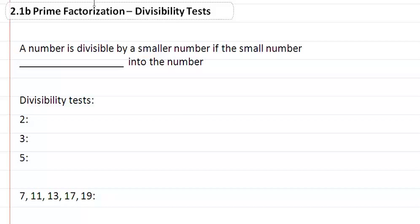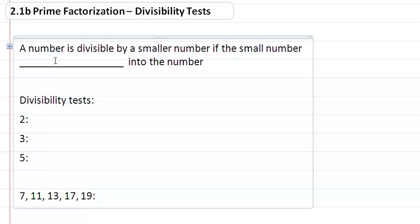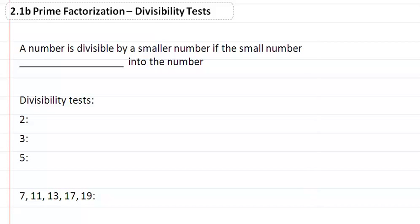2.1b Prime Factorization and Divisibility Tests. A number is divisible by a smaller number if the small number divides into the number.